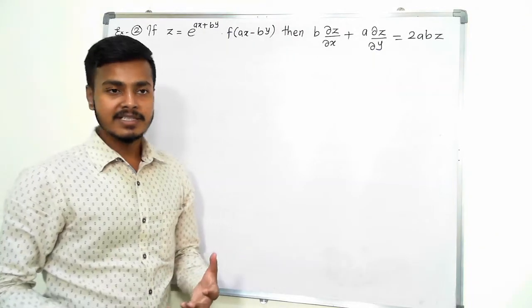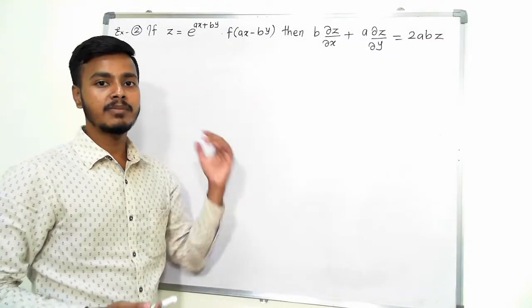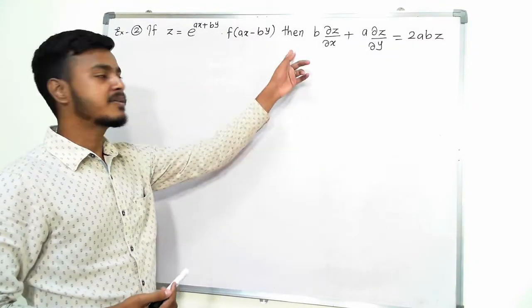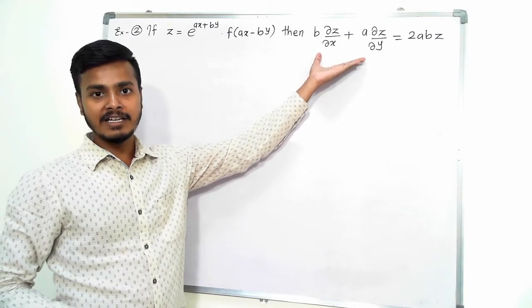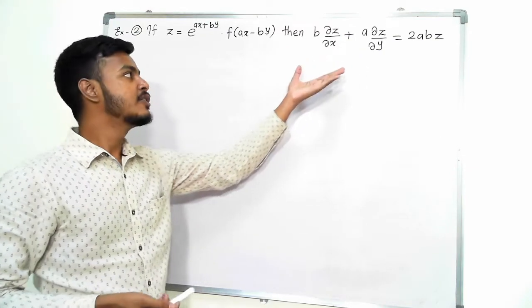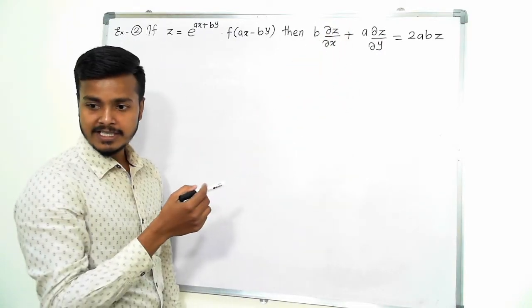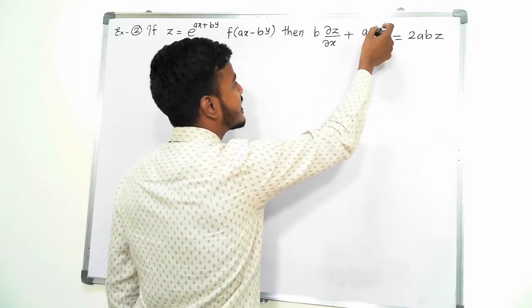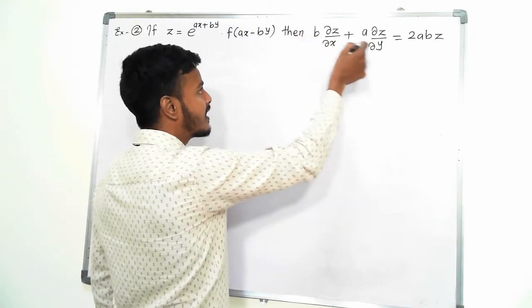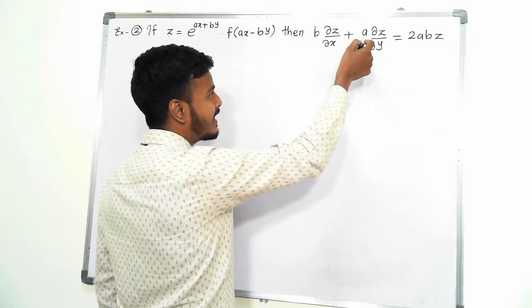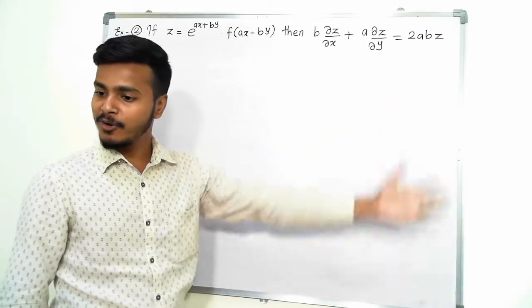You can take a moment and think about how to approach this type of problem. As this is a 'prove that' problem, it gives us an idea of how to proceed. What I can do is find out ∂z/∂x and ∂z/∂y, then multiply ∂z/∂x by b and ∂z/∂y by a, and then add. Then we will see whether we are getting 2abz or not.